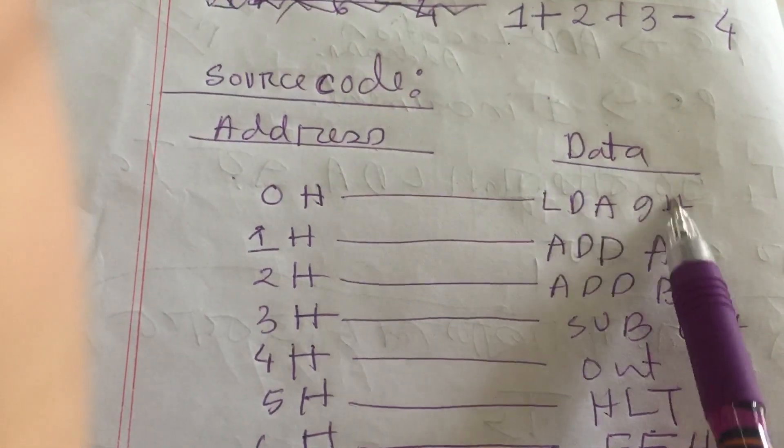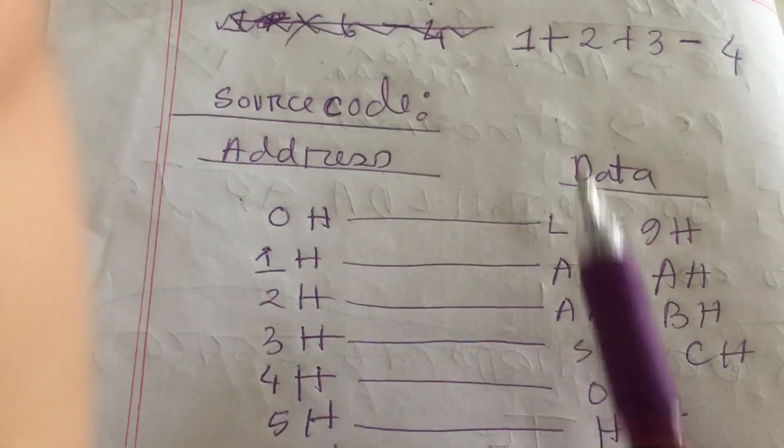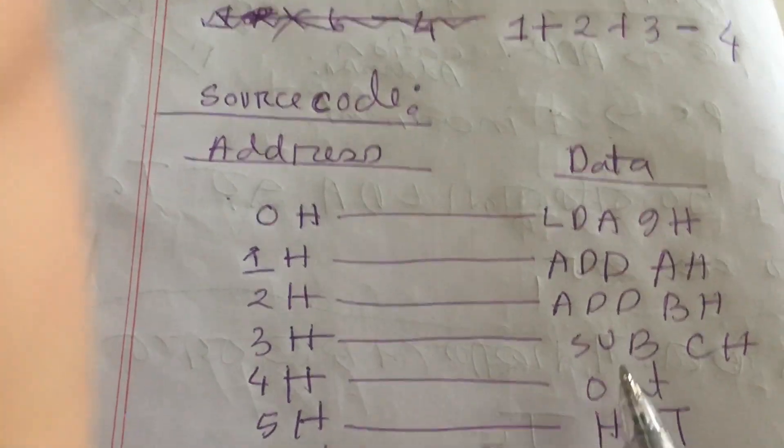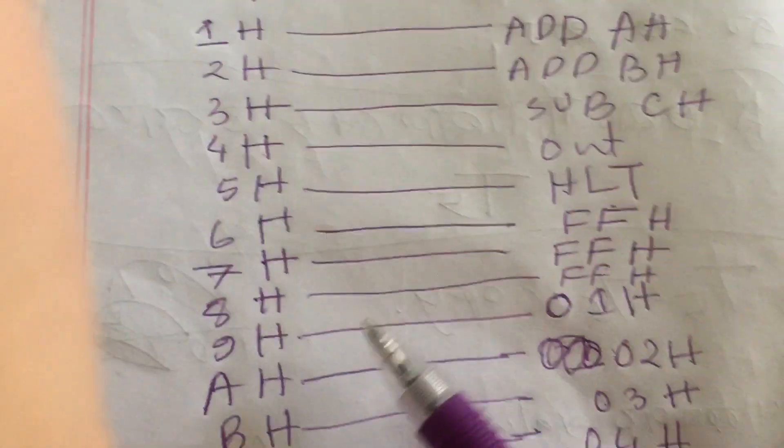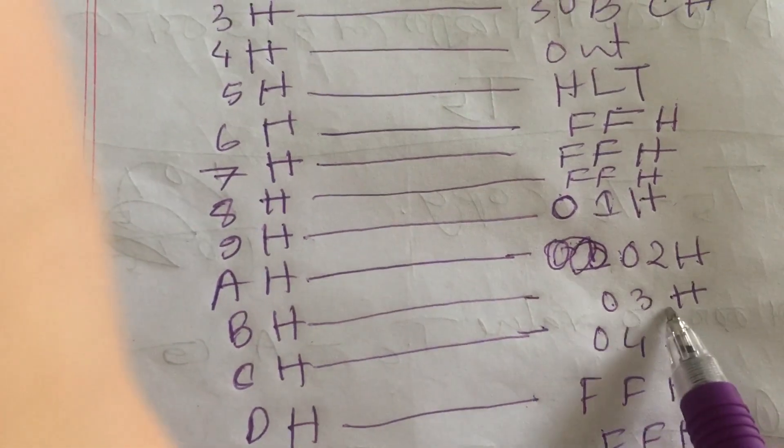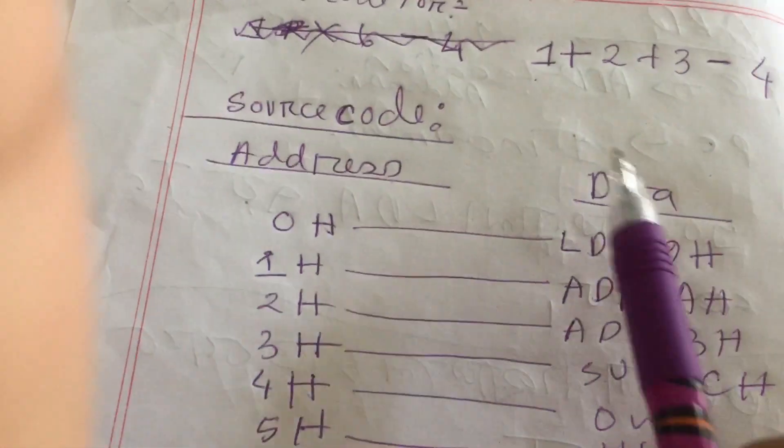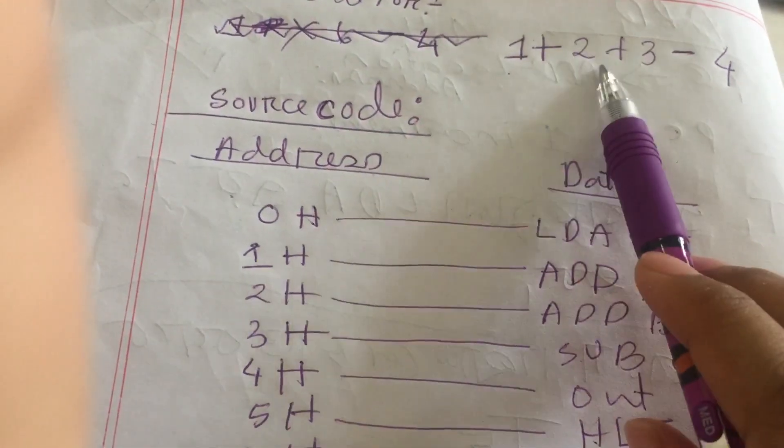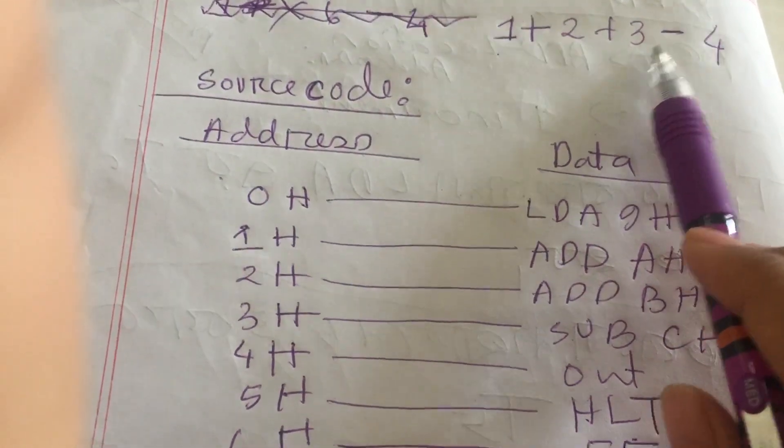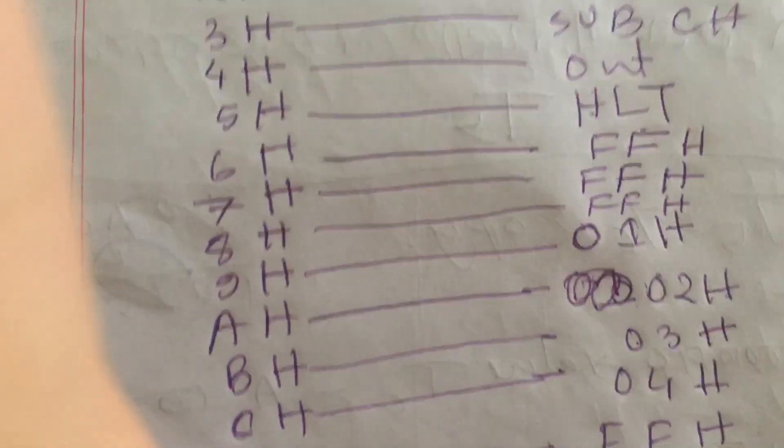So in 9H there is 1, in AH there is 2, and 3 is loaded in BH. So it will be like this: 1 plus 2 plus 3, and minus 4. 4 is loaded in CH.